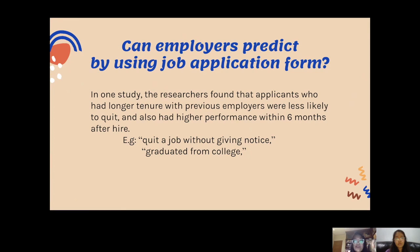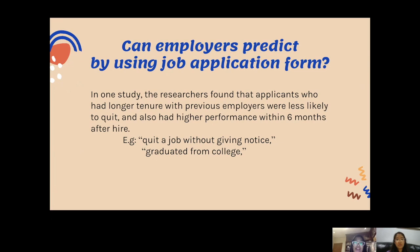Can employers predict future performance using job application forms? Yes. In one study, researchers found that applicants who had longer tenure with previous employers were less likely to quit and had higher performance within six months of hiring. For example, if an applicant quit a job without giving notice, HR can predict they may be irresponsible and potentially unsuccessful on the job. Conversely, if an applicant graduated from college with a good GPA, HR can predict they may be well-qualified. As HR, we must avoid considering race, age, and gender per EEO law, and also avoid invasive questions such as birth order or personal dating history, as these have no correlation with the job.